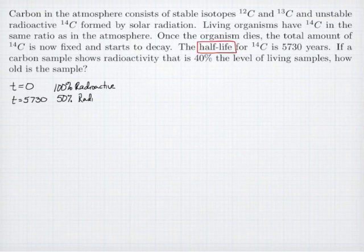If we think about time zero as being 100% radioactive, then every 5,730 years it decreases by half. So after one half-life we're at 50%, but at two half-lives, which is 11,460 years, I'm at half of half, which is 25%.